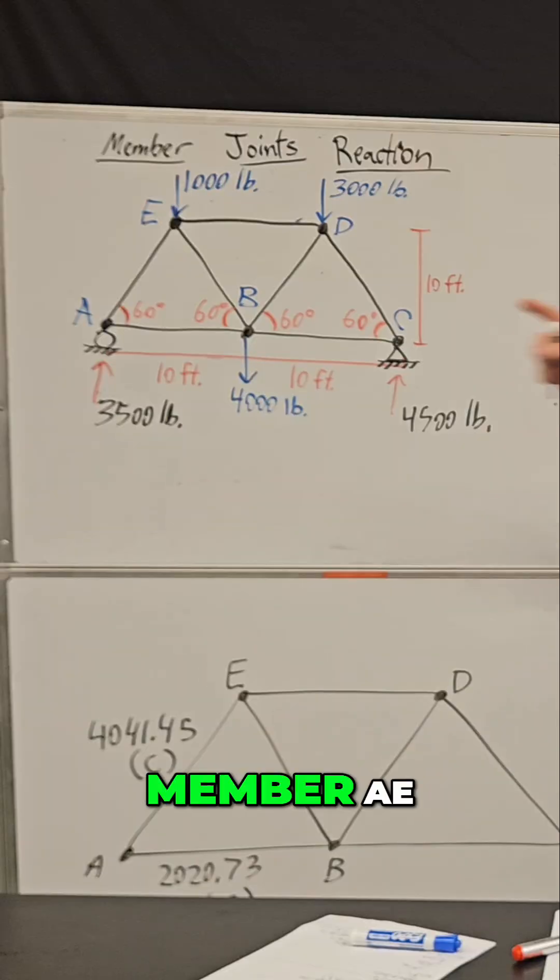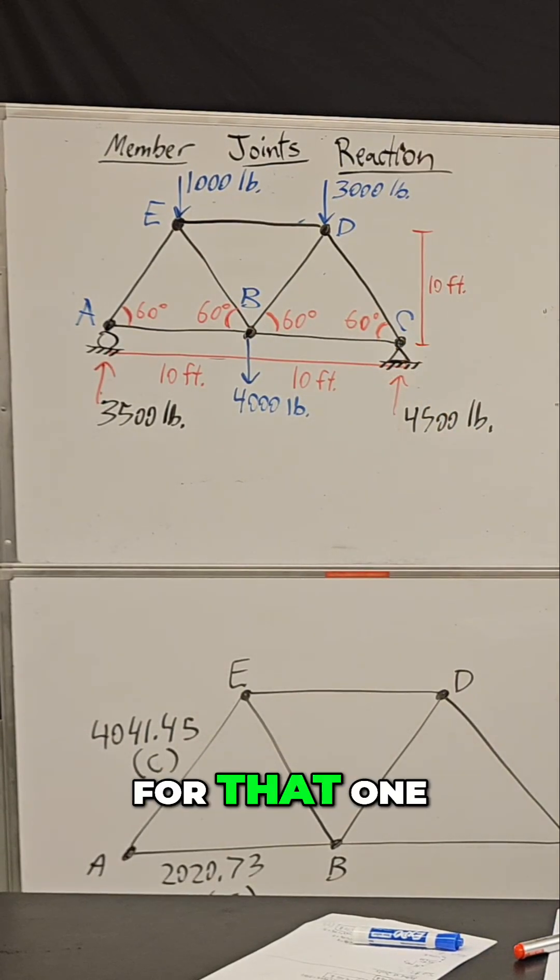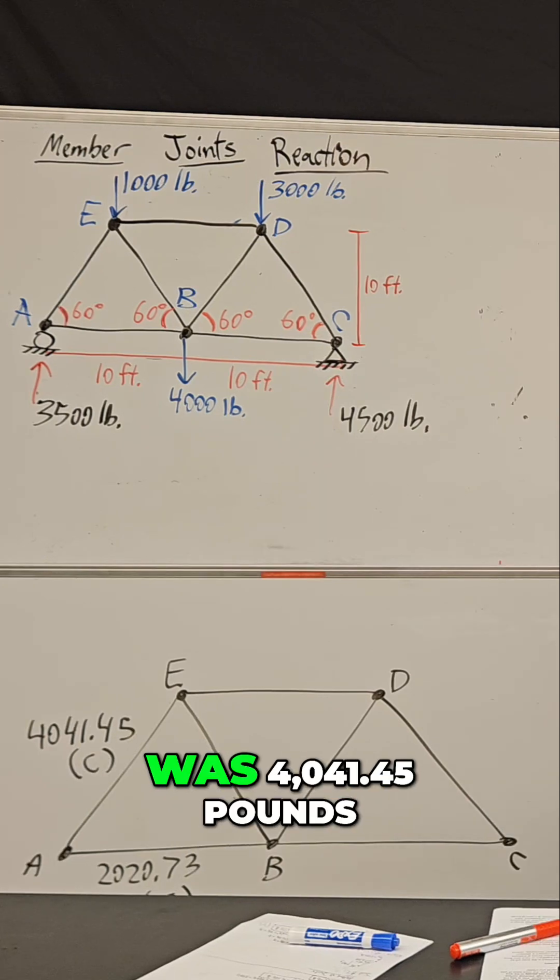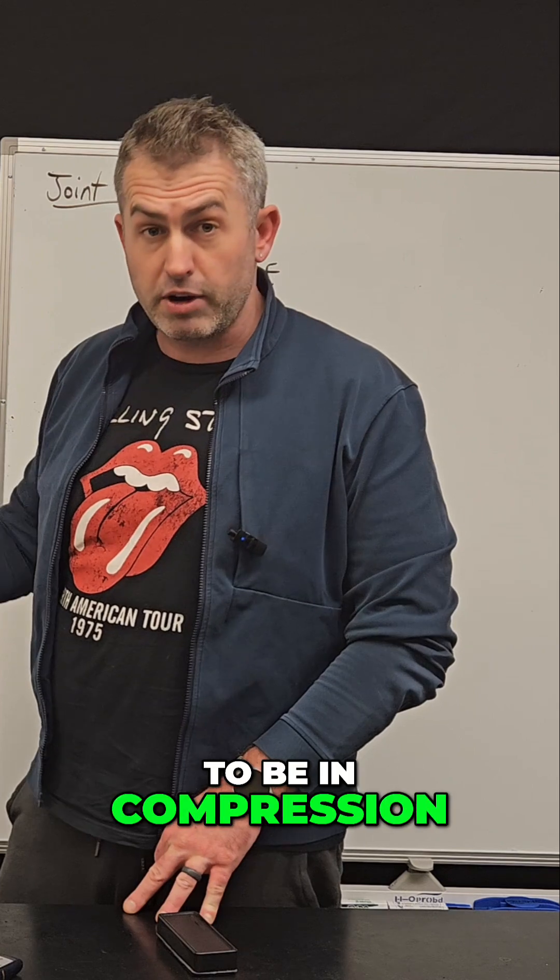Now we do have member AE. But remember, we already solved for that one. We said that member AE was 4041.45 pounds, but that one was already found to be in compression.